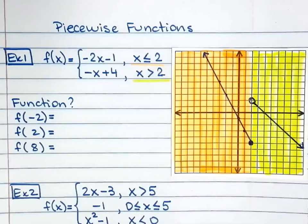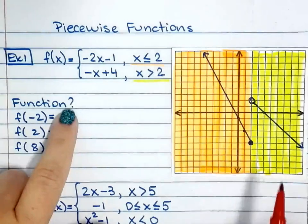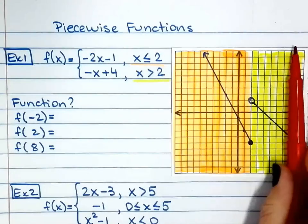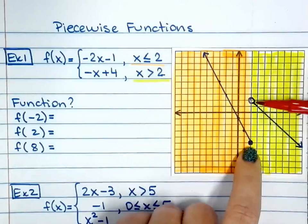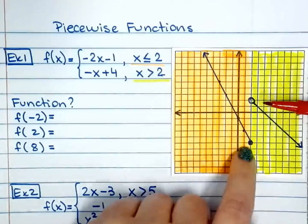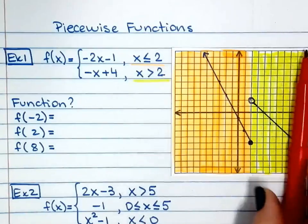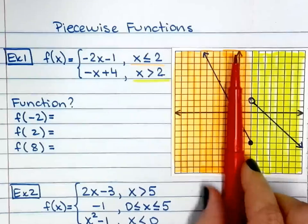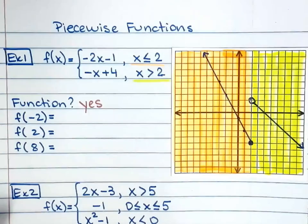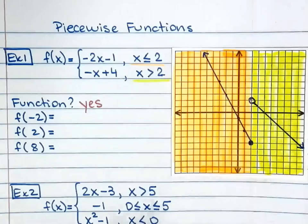Now, is this a function? There are two different ways to remember what a function is. One: does it pass the vertical line test? The vertical line is going to cross at two points, but the good news is one is an open dot — that means that point is not quite there. This one is, this one is not. So it passes the vertical line test. Or you might remember: x does not repeat. So yes, it is a function.